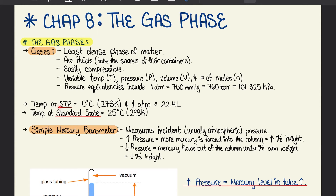Temperature at STP is equal to 0 degrees Celsius, which is 273 Kelvin, at 1 atmospheric pressure and 22.4 liters. Temperature at standard state, however, is 25 degrees Celsius, which is 298 Kelvin.